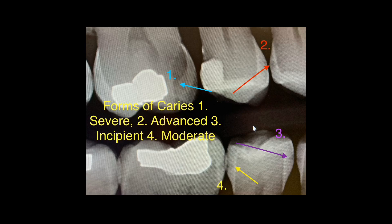The most extensive form is severe caries, in which the lesion has extended more than halfway through dentine. In this clip, number one, pointed by the blue arrow, represents this severe form of caries.